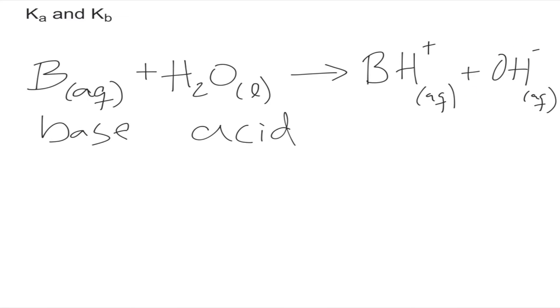Using the same method as before, the OH minus will accept a proton from the BH plus, making that the conjugate base. And because the BH plus, if we flip the equation, will donate that proton to go back to the base, that makes it the conjugate acid.